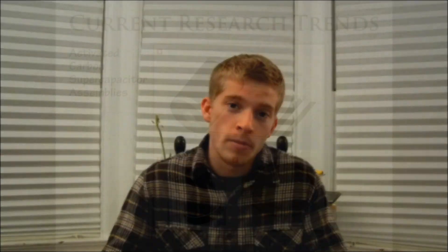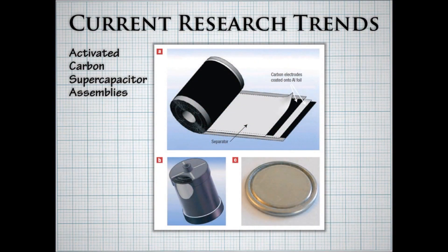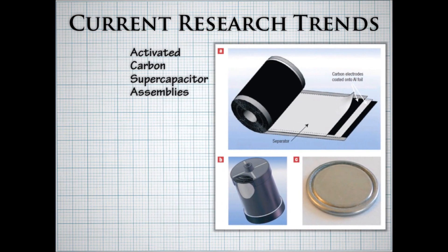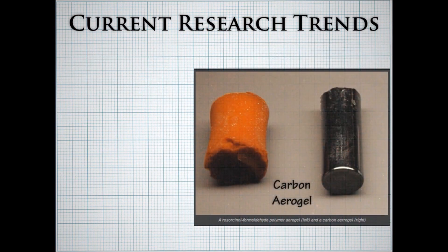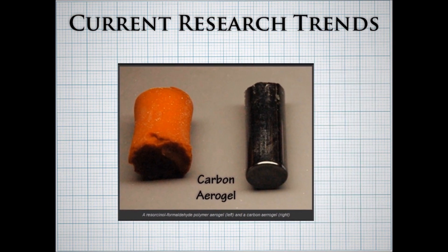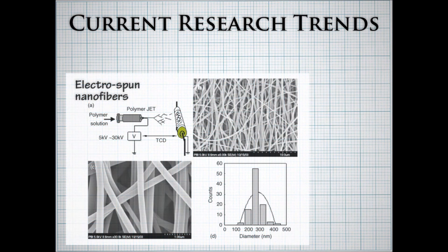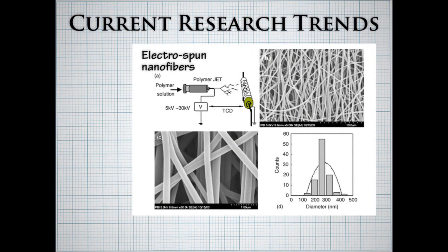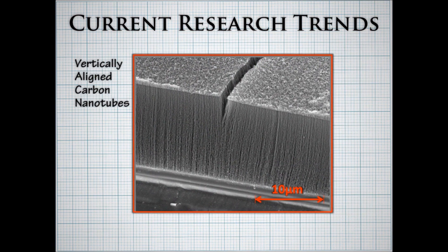Scientists have also developed new nanoscale electrodes out of carbon nanotubes, graphene, and carbon aerogels. Current research trends indicate that control over large macropores and tiny nanopores is key to increasing the efficiency of carbon electrodes. Shown here are several types of high surface area carbon materials created in research laboratories.